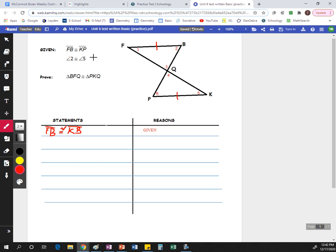Then you go to the second piece of given information. Angles 2 and 5 are congruent to each other. So you want to mark that in the picture. Angle 2 is congruent to angle 5. And that becomes our next line in the proof. We want to say angle 2 is congruent to angle 5. And the reason for that, once again, is given.